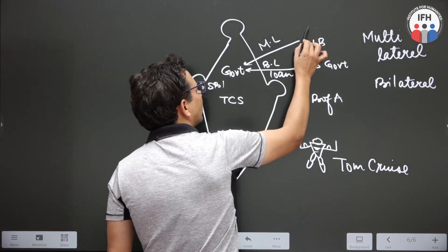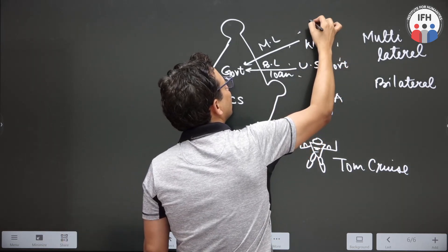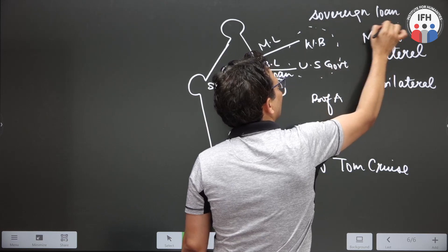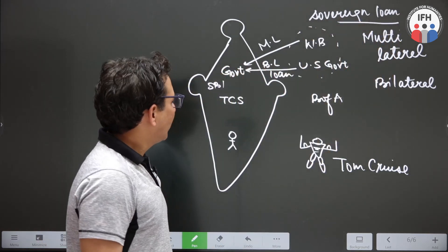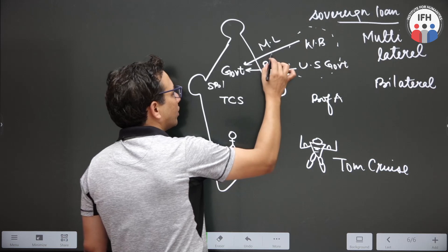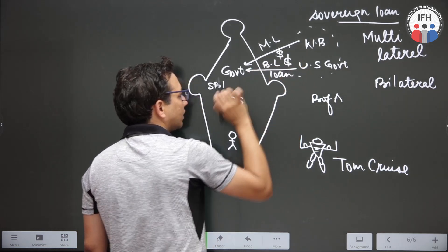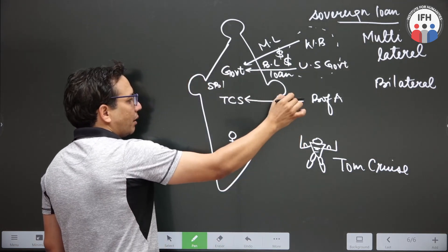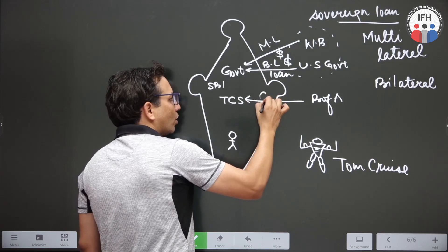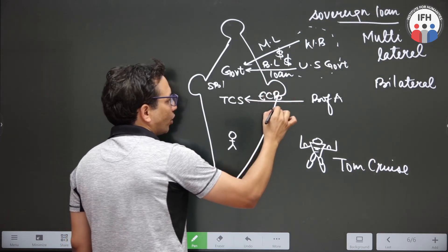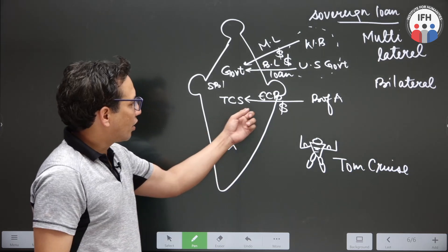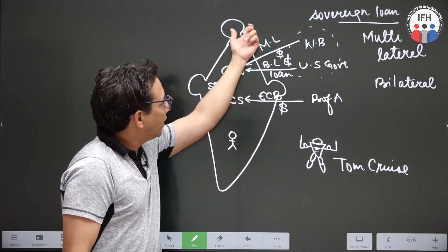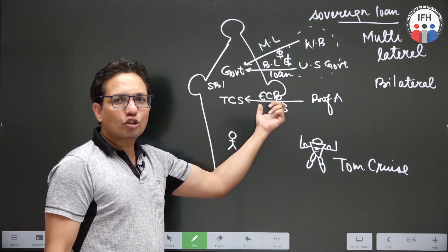Both these loans — bilateral and multilateral — are classified as sovereign loans, because our independent sovereign government is taking the loan. Both these loans will obviously be in foreign currency. If TCS, an Indian company, is borrowing from a bank outside India, it will be called ECB — External Commercial Borrowing. This transaction is taking place across the border, hence it is also part of balance of payments.